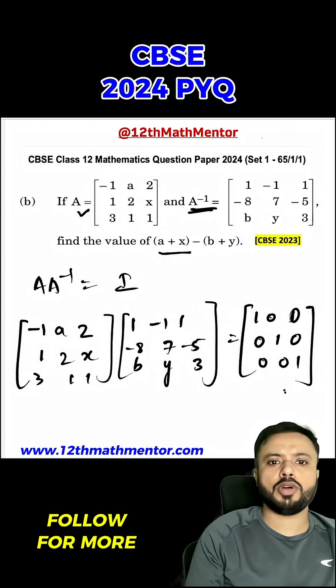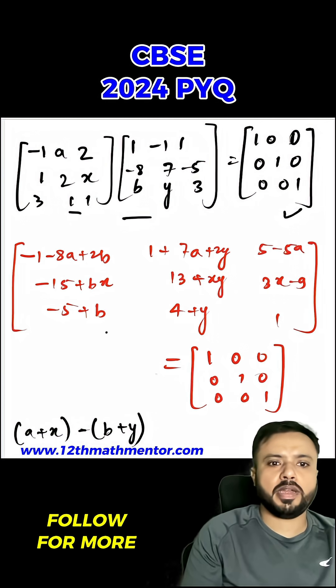I multiplied A and A inverse and equated it to identity matrix. After multiplying A and A inverse, I got this particular matrix and equated it to the identity matrix.